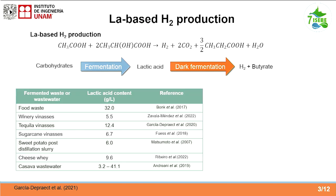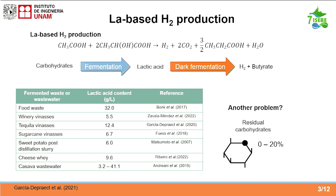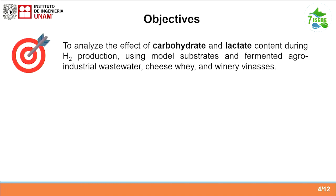In this table, you can see that many different fermented wastewaters can produce a high content of lactic acid. The problem here is what happens with the residual carbohydrates, because especially when you don't have control of the fermentation step when you produce lactic acid, you're going to have residual carbohydrates, which can range from 0% to 20% in some reports. The objective of this research was to analyze the effect of carbohydrate and lactate content during hydrogen production using model substrates and fermented agro-industrial wastewater.